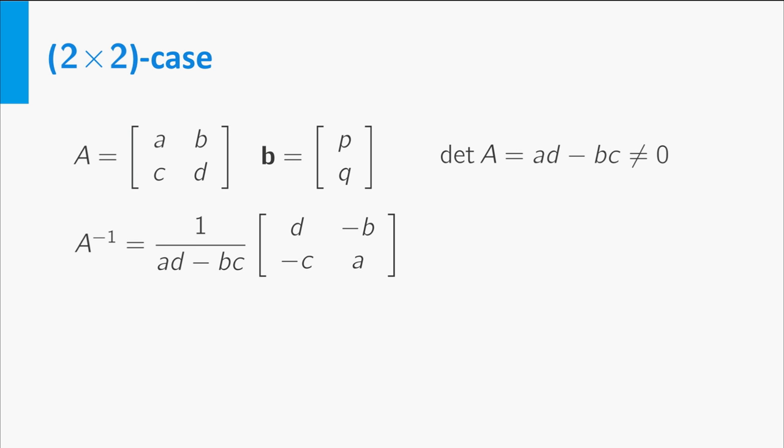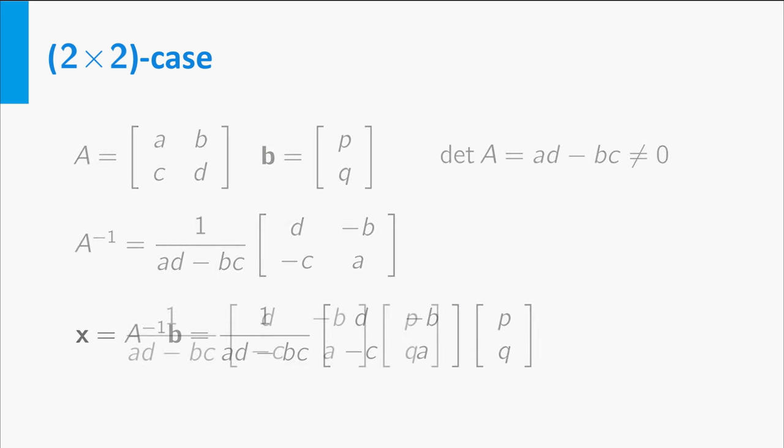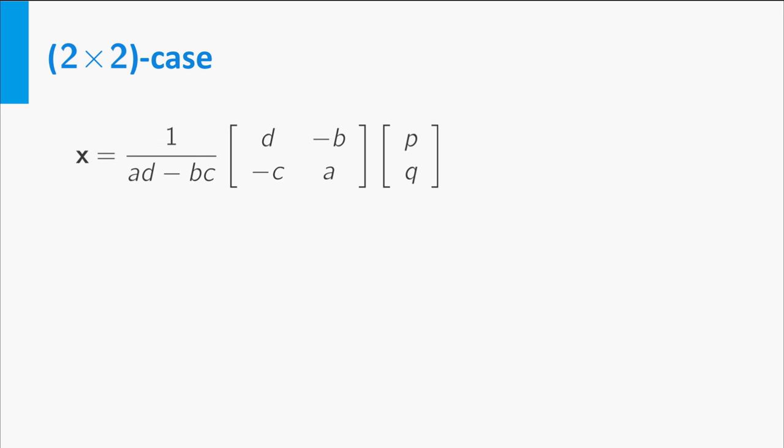The inverse of A is given by 1 over (ad minus bc) times the matrix [d -b; -c a]. So the solution x of the system is equal to the expression shown here, which is equal to 1 over (ad minus bc) times the vector [dp minus bq; -cp plus aq].